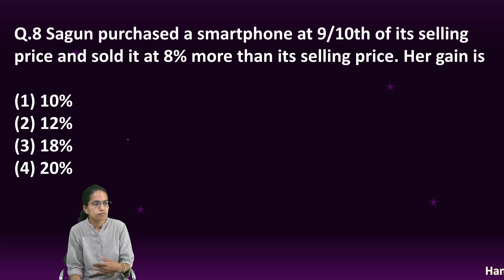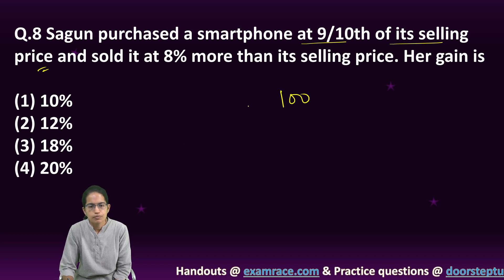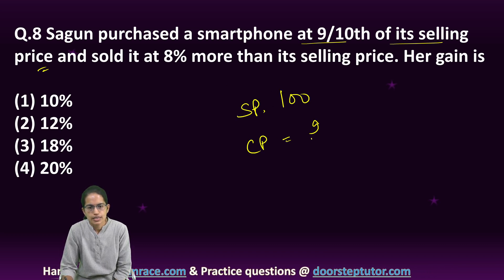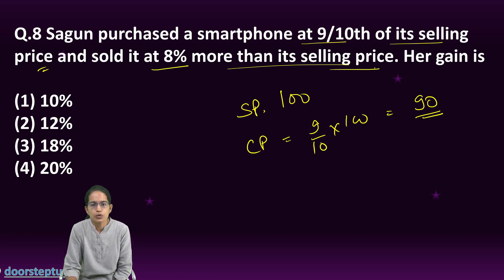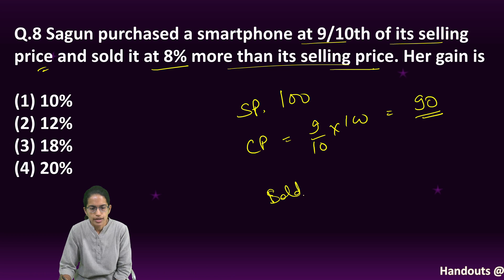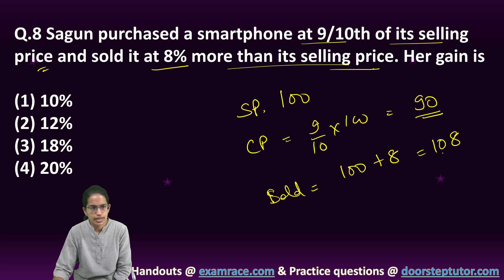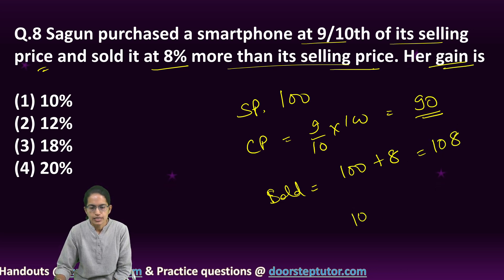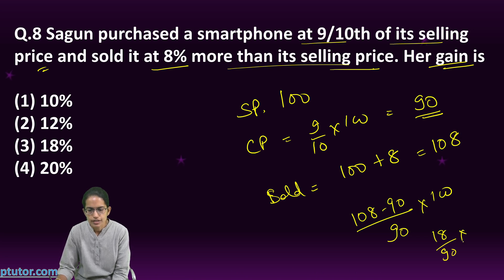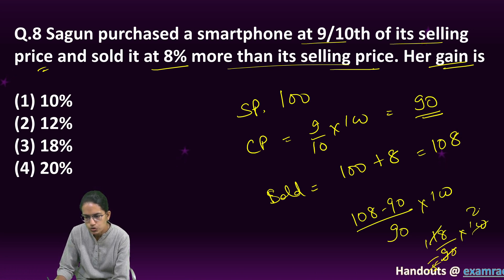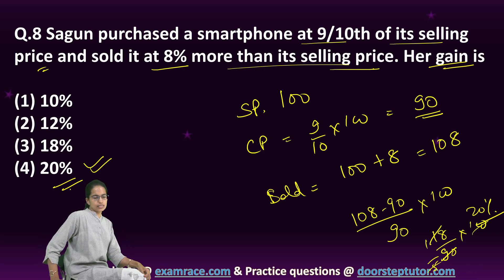The next question: Shagun purchased a smartphone at nine-tenths of the selling price. Let the selling price be 100, so the cost price is 90 rupees. He sold it at 8 percent more than the selling price, so he sold it at 108. The profit is 108 minus 90 = 18, divided by cost price 90, into 100, which gives 20 percent. So the gain is 20 percent.